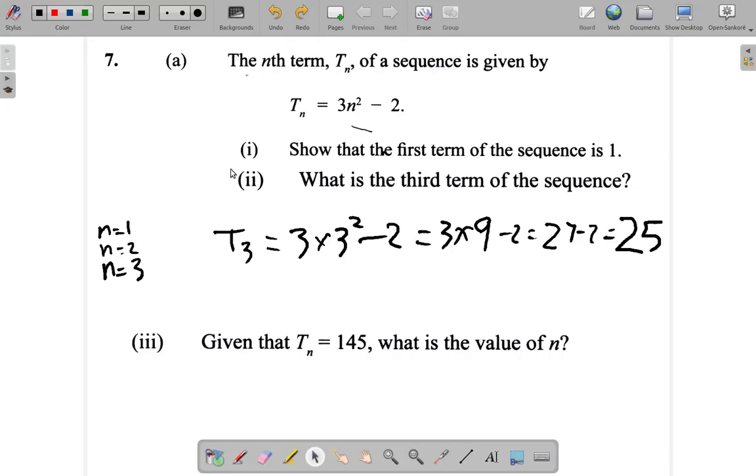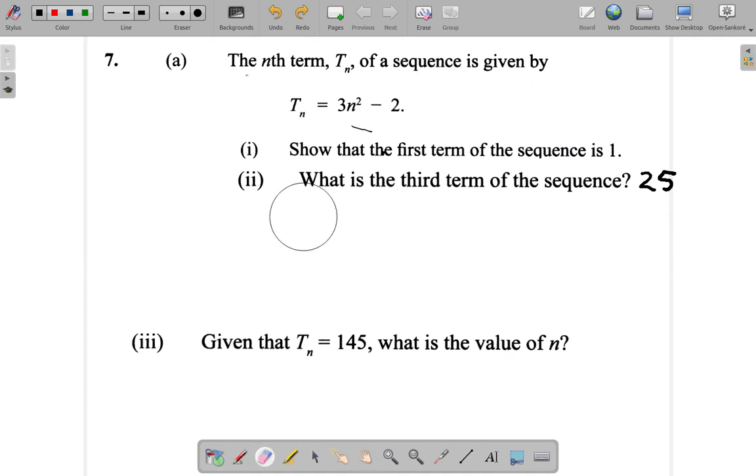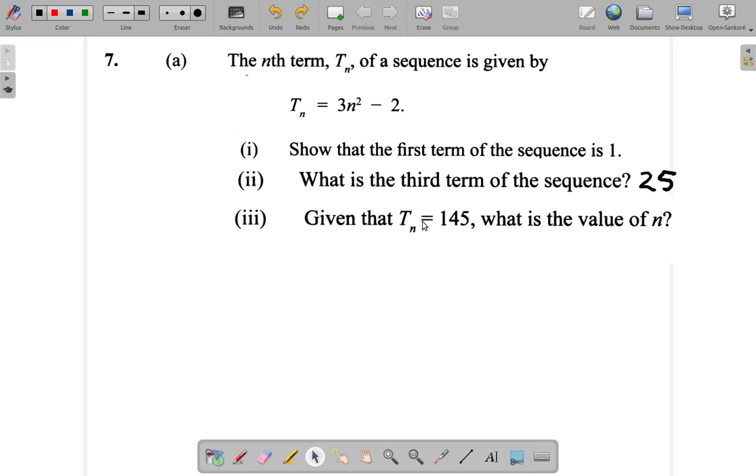All right, we reach part 3 now of question 7. We saw that the third term was 25. Let me just write it here. It was 25, the third term of the sequence. Now what they're saying is given that Tn is 145. What is the value of n?